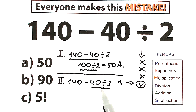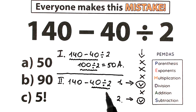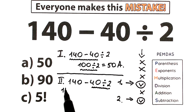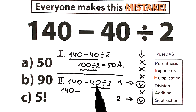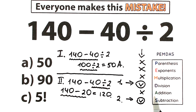Going further, we have only the subtraction sign, so we skip addition and move to subtraction as our second step. So: 140 minus 40 divided by 2 — first, 40 divided by 2 equals 20. Then 140 minus 20 equals 120. The main rule: division is before subtraction, always. So here is our answer: 120.